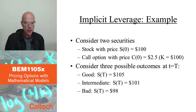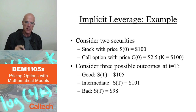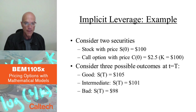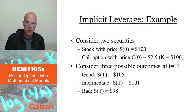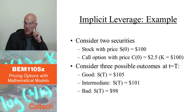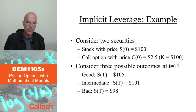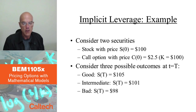It was mentioned that it may be risky to trade in options. Here is a simple numerical example showing how trading in options is like being able to borrow money to get into more risky positions. This is what this example is about — it's called implicit leverage, meaning borrowing, having a lot of borrowed money in your portfolio.